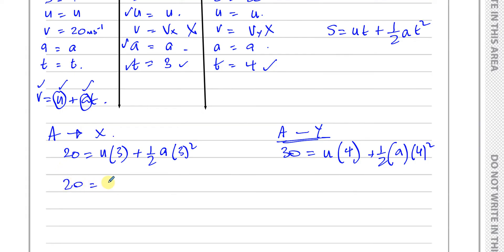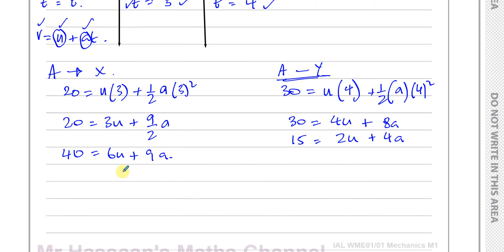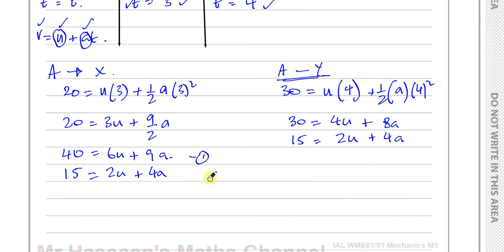Simplifying the first equation: 20 equals 3U plus 9A/2. Multiplying through by 2 gives 40 equals 6U plus 9A — call this equation 1. Simplifying the second equation: 30 equals 4U plus 8A, which divides by 2 to give 15 equals 2U plus 4A — call this equation 2. Now I can solve these simultaneously. Multiplying equation 2 by 3 gives 45 equals 6U plus 12A — equation 3.